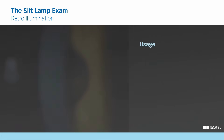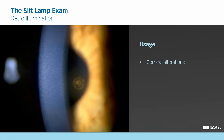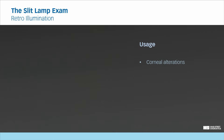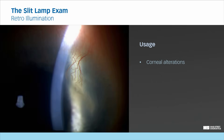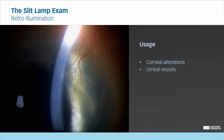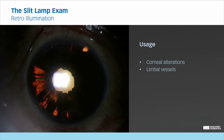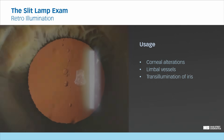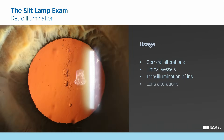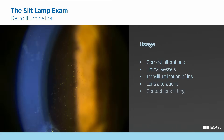Retroillumination allows detection and differentiation of corneal irregularities. It is highly effective for visualizing the extent of limbal vessels and neovascularization. It is the method of choice for detecting transillumination of the iris. It is useful in assessing irregularities and opacities in the lens. In contact lens fitting, it is used for assessing deposits and for identifying marks or defects.